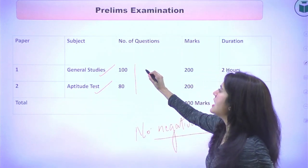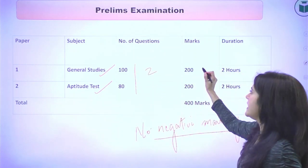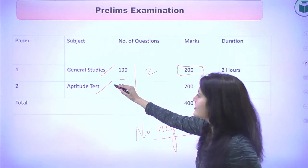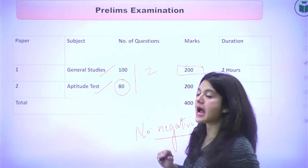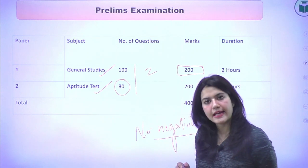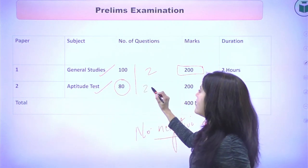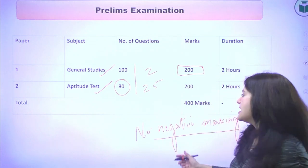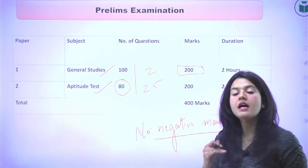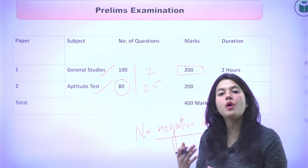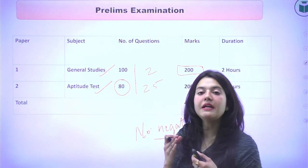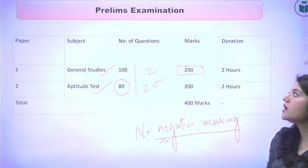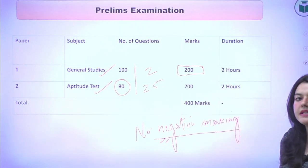In the GS paper, there are 100 questions with 2 marks each, making a total of 200 marks. The aptitude test has 80 questions with 2.5 marks each. There is no negative marking currently. If a new notification comes out, we will update based on any changes.